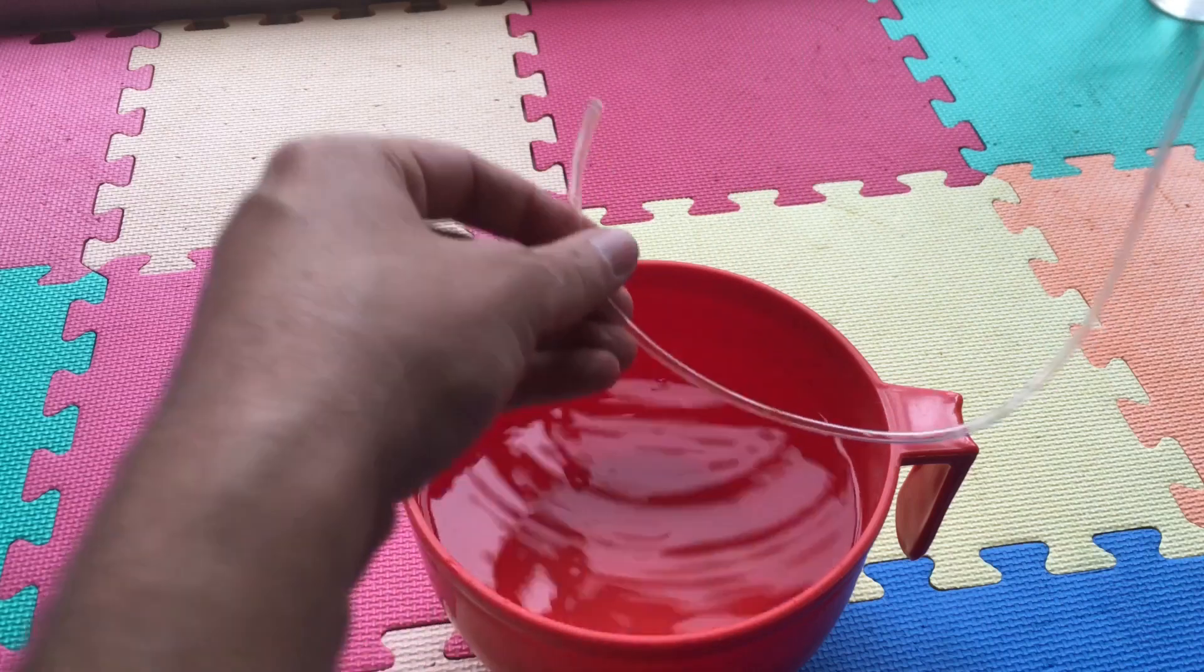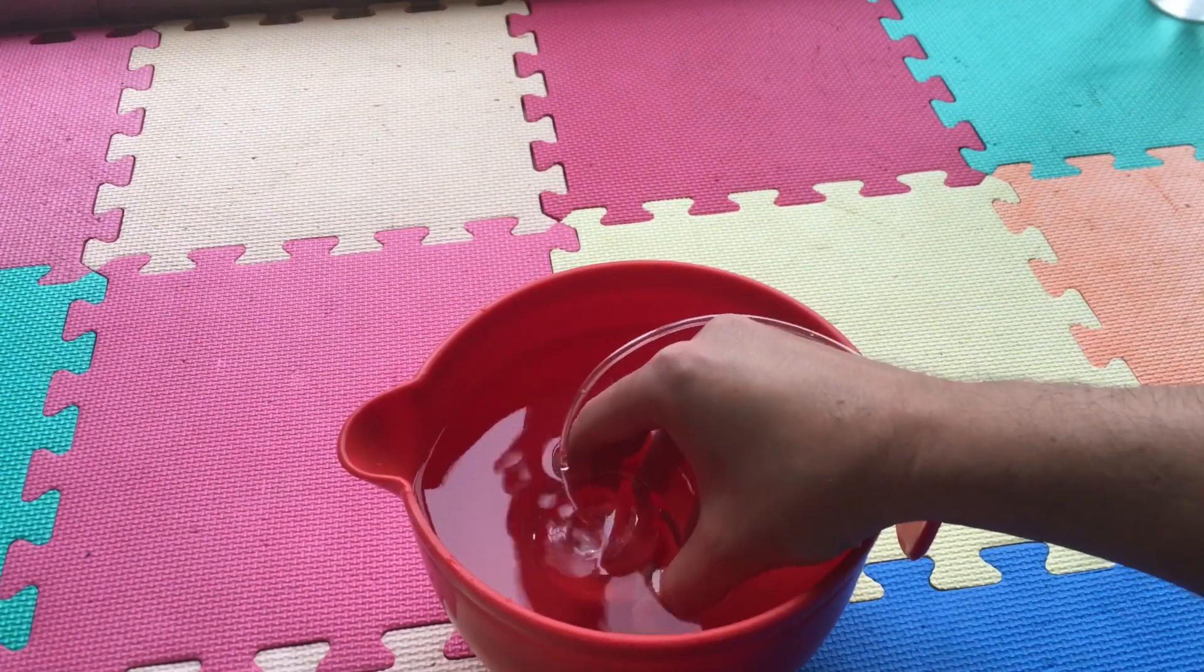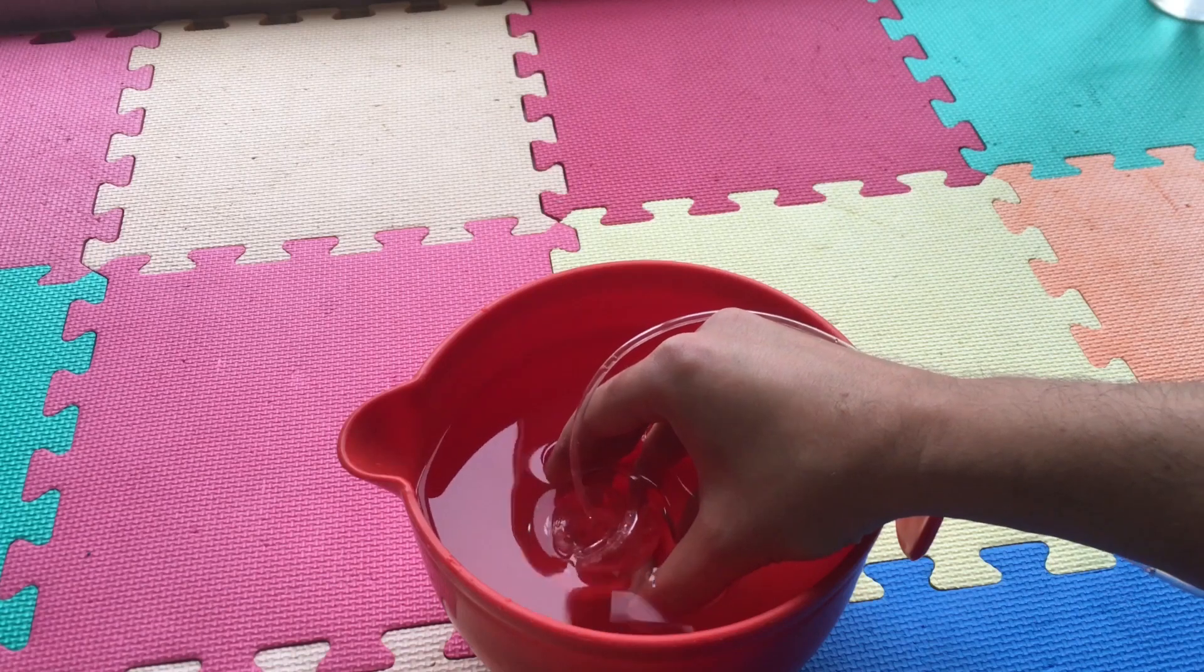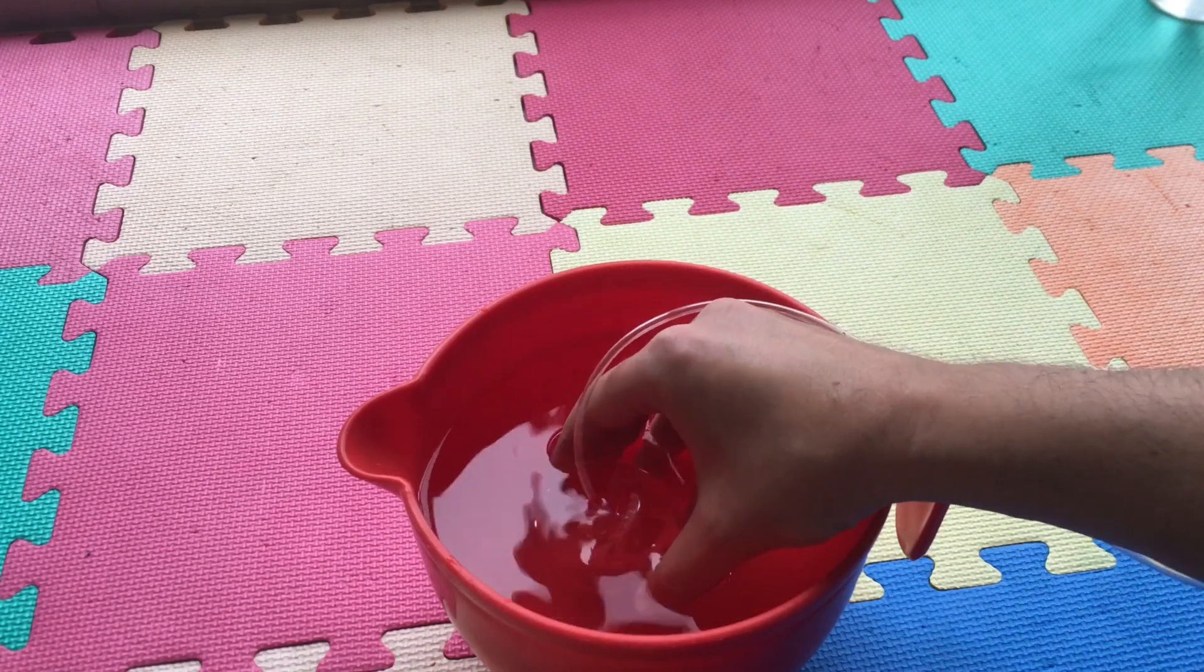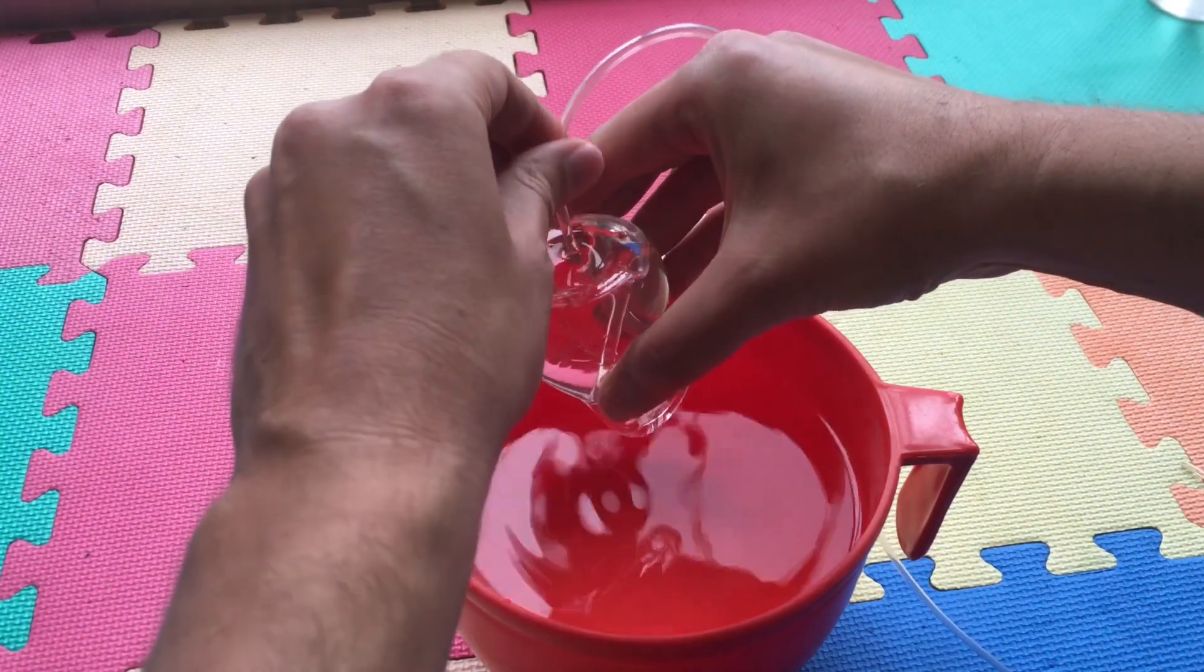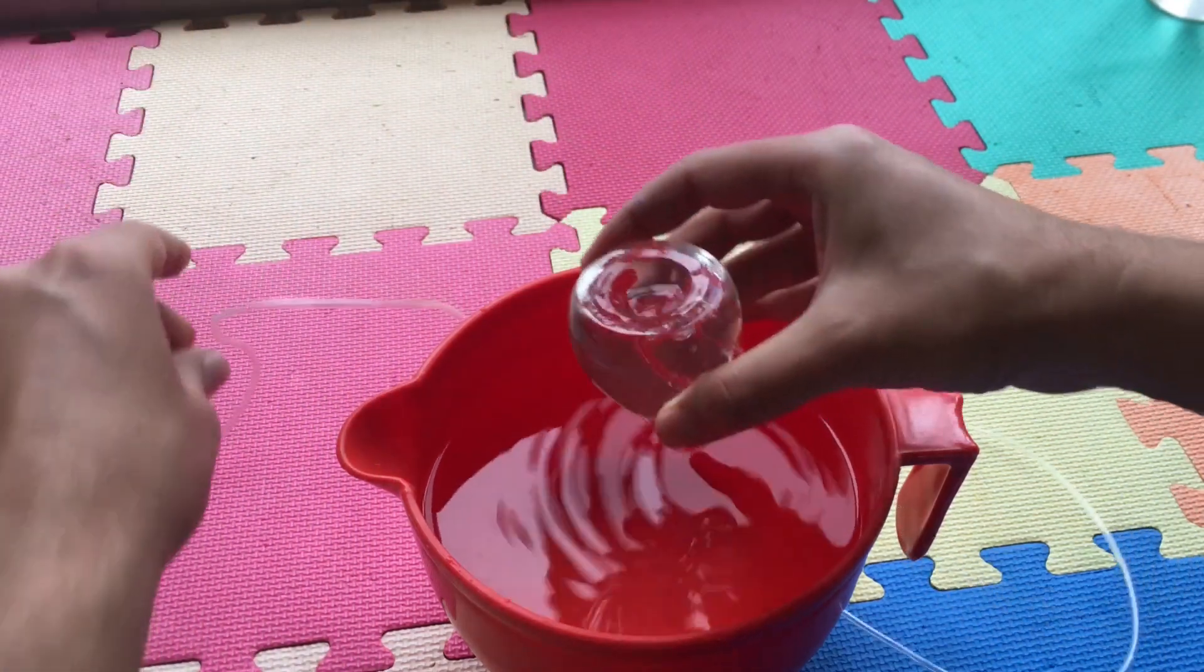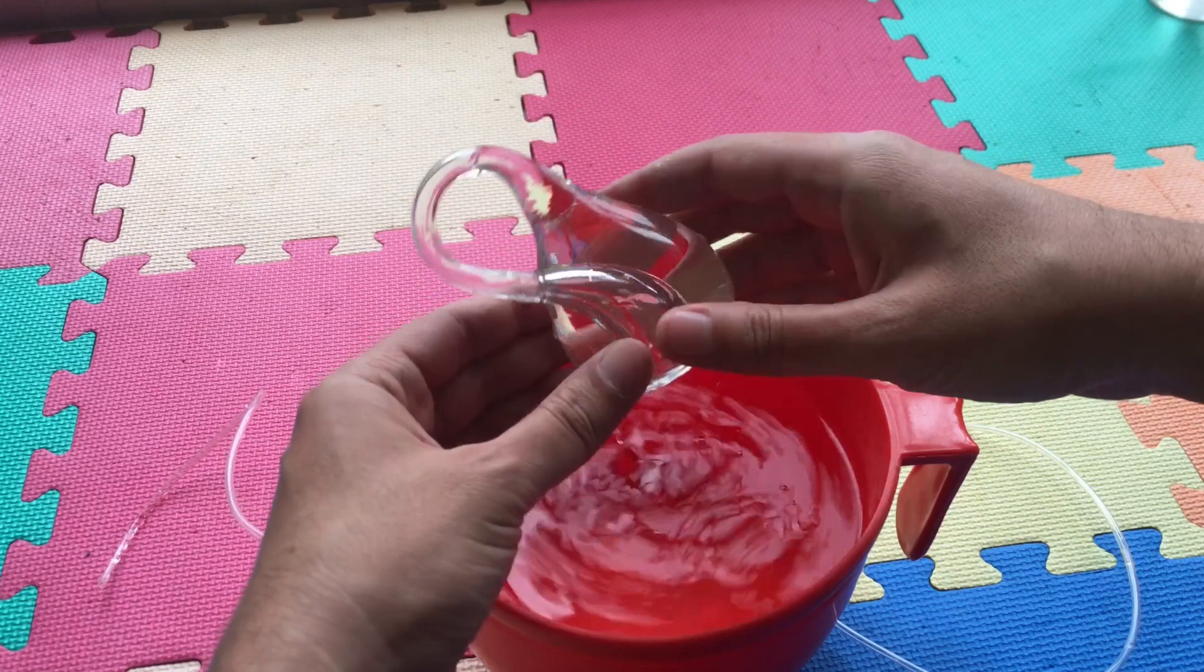Put it inside and then blow out the air so the water gets inside. Now it's filled with water. So this is the way to fill water inside the Klein bottle.